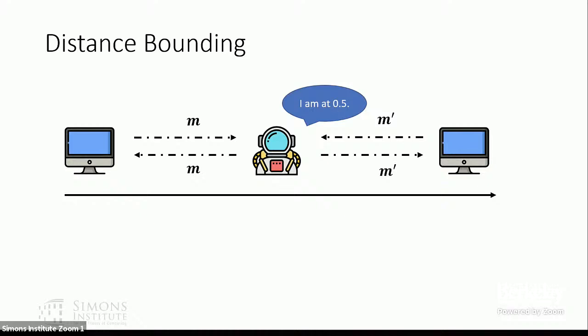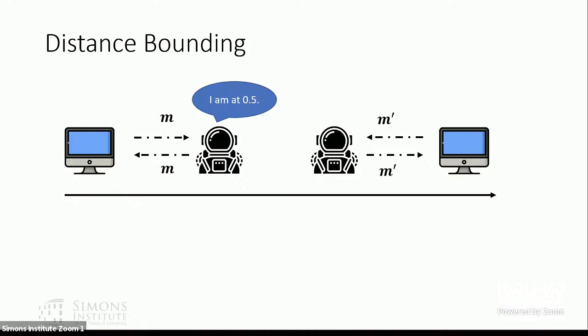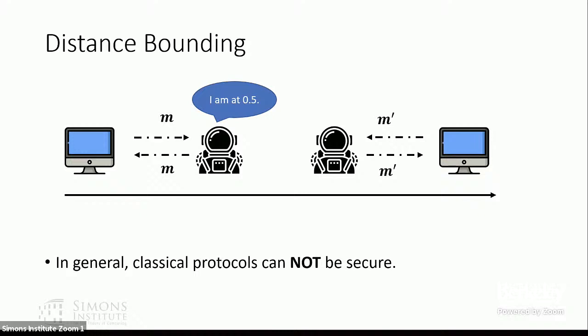We can put another verifier on the right and have both do distance bounding to claim the astronaut is exactly at 0.5. However, there are problems with this protocol. Instead of one astronaut, we could have two malicious astronauts with a colluding strategy — one at 0.3 and one at 0.7. They can each handle queries from the nearest verifier. In general, any classical protocol cannot be secure: if all communication and computation are purely classical, there is no secure position verification protocol.